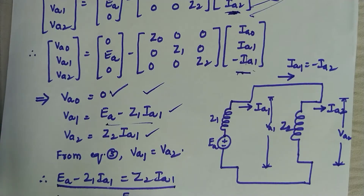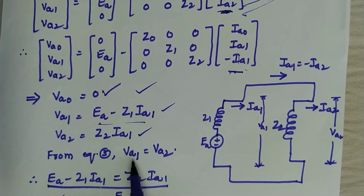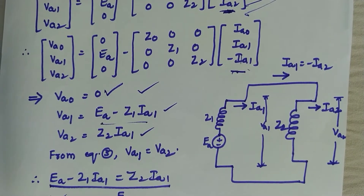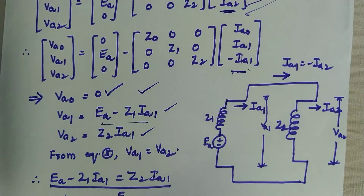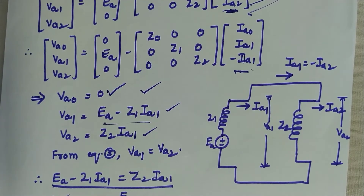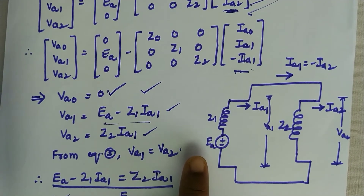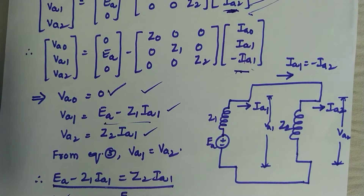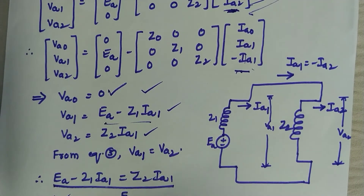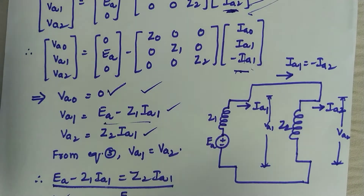Since Va1 equals Va2, the positive and negative sequence networks of the generator must be connected in parallel. Since Va0 is 0, the zero sequence network is shorted and need not be considered. Since this fault does not involve any ground connection, the neutral current is 0, and hence the presence or absence of a grounded neutral at the generator does not affect the fault current.